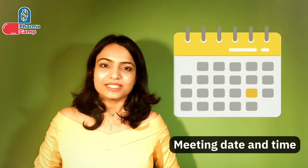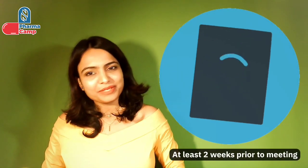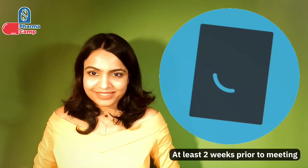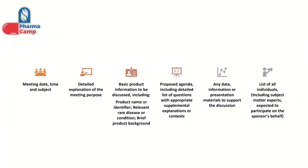Once we submit the meeting request, within five calendar days OOPD determines the meeting type and communicates the proposed meeting date. Once we as a sponsor know the meeting date, at least two weeks prior to the meeting we submit a meeting package. This package contains the meeting date, time and subject, a detailed explanation of the meeting purpose, basic product information, product background including how it may be used for the rare disease or condition, and a proposed agenda with a detailed list of questions and supporting data.